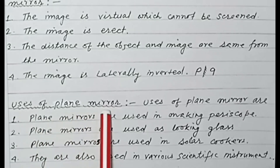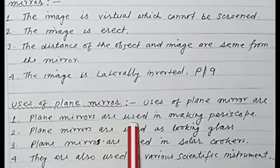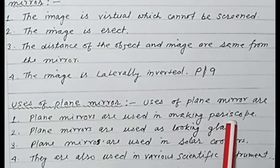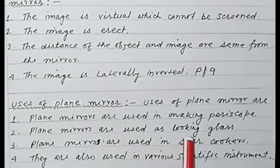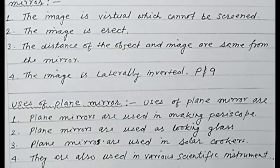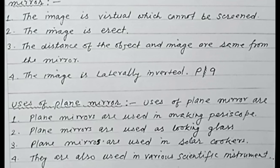Uses of plane mirror: plane mirrors are used in making periscopes. Bachon, periscope banane ke liye plane mirror ka use kiya jaata hai. Plane mirrors are used as looking glass — ghar mein jo looking glass hota hai, woh plane mirror ka hota hai. Plane mirrors are used in solar cookers — solar cooker mein plane mirror ka use kiya jaata hai. They are also used in various scientific instruments — various scientific instruments mein bhi plane mirror ka use kiya jaata hai.